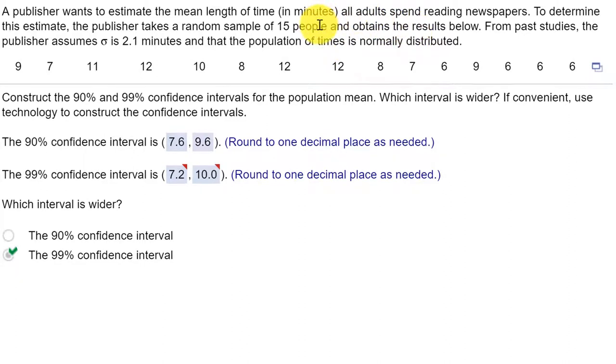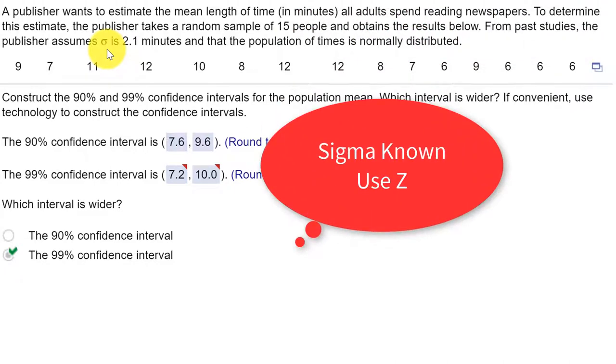This is a small sample, and you would think about using the T distribution, but here we know the population standard deviation sigma, and so in our course, whenever you know sigma, you use the Z distribution.